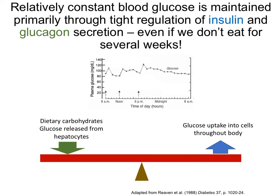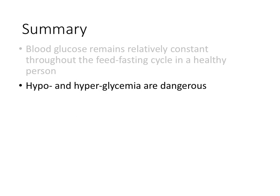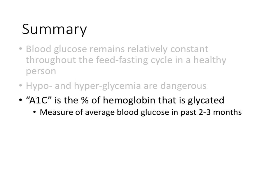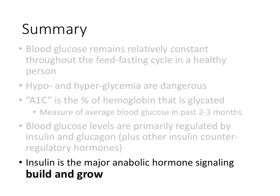A healthy level of blood glucose can be maintained even if we do not eat for several weeks. To summarize: blood glucose levels remain relatively constant throughout the feed-fasting cycle in a healthy person. Both hypo- and hyperglycemia are dangerous. A1c is the percent of hemoglobin that is glycated and is a measure of the average blood glucose levels in the past two to three months. Blood glucose levels are primarily regulated by insulin and glucagon, plus other insulin counter-regulatory hormones like epinephrine and cortisol. And finally, insulin is the major anabolic hormone, signaling to build and grow when nutrients are available.